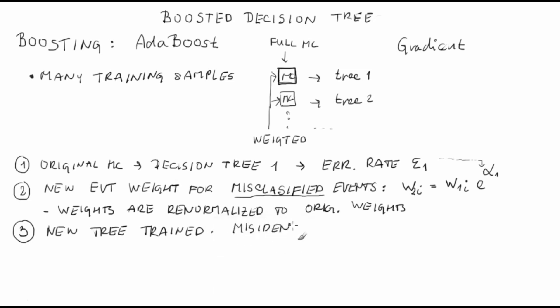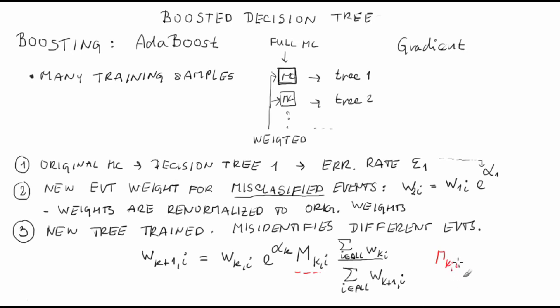This tree misclassifies some other events and their weights are updated with the same algorithm. So, the weights in sample k plus 1 are W_(k+1)i equals W_ki times e to the power of alpha_k times m_ki, all this times sum over i iterating over all events W_i divided by the sum over i iterating over all events W_(k+1)i. The number m_ki is 1 for events misclassified by the tree k and it is 0 for events classified correctly.